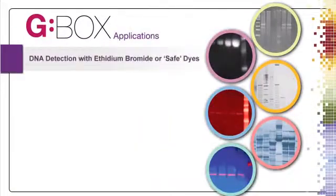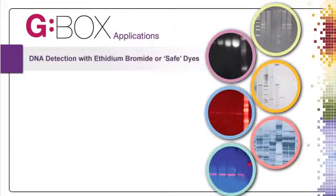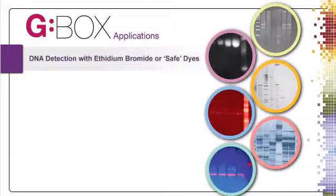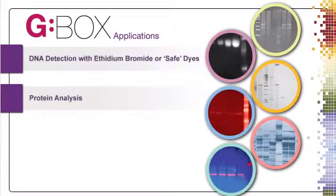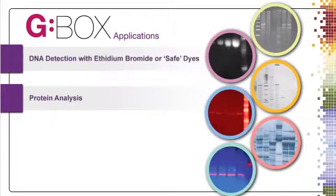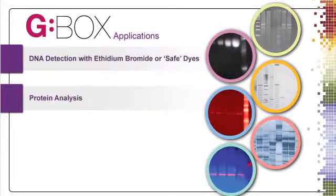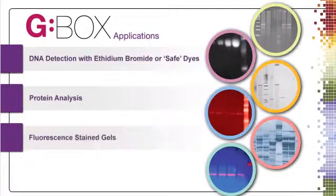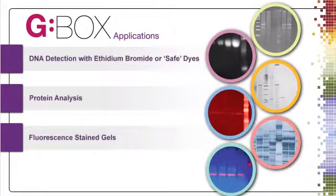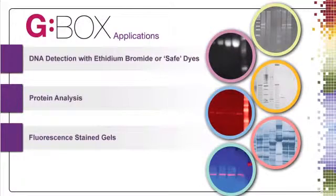Using the UV trans-illuminator and UV emission filter, images of ethidium bromide stained DNA gels can be captured in a fraction of a second. Protein gels can easily be captured with a G-Box using a white light converter screen with the UV trans-illuminator or a white light table. Using the correct excitation light source and corresponding emission filter, virtually any application can be used with a G-Box.